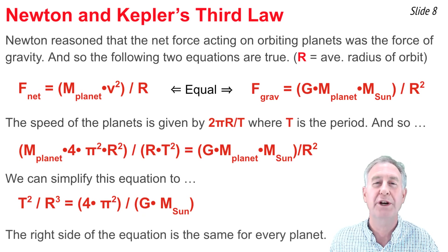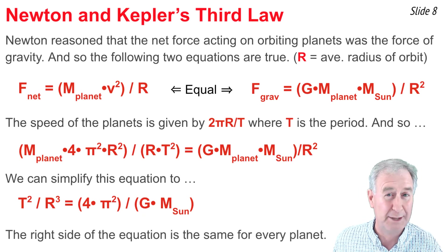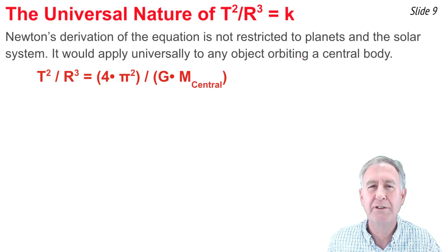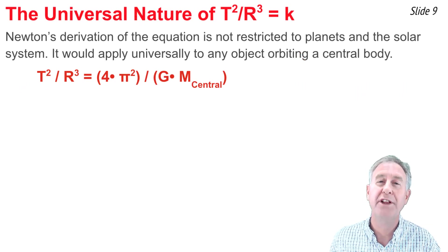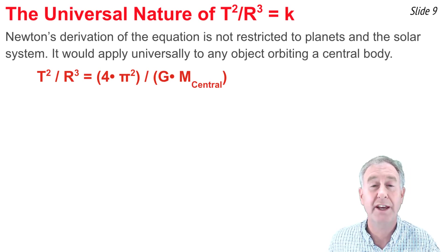Thus, the T² / R³ ratio is the same for every planet. Isaac Newton's derivation of this equation was based on the law of universal gravitation, and as such, should be universal in nature.